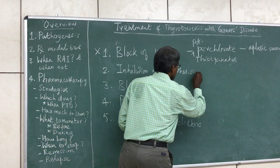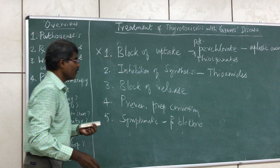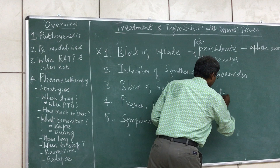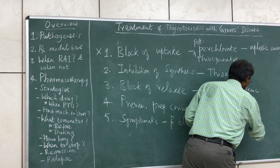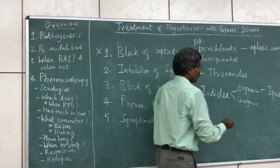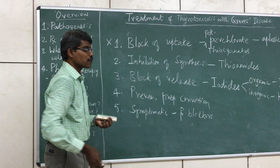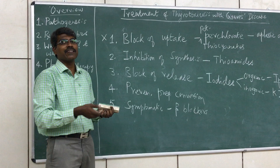Inhibition of synthesis using thioamides is one of the most effective strategies available. Blocking release of hormone can be accomplished with iodides — either organic iodides such as radiocontrast media containing iodine, or inorganic potassium iodide. However, iodides cannot be used alone because after some time the gland will escape from the block — so-called iodide escape — and paradoxically can increase hormone release.